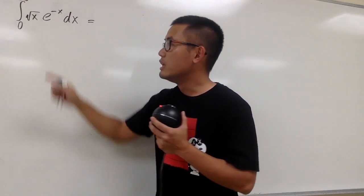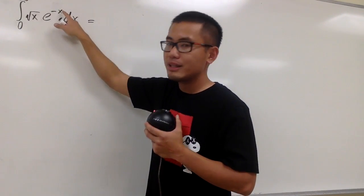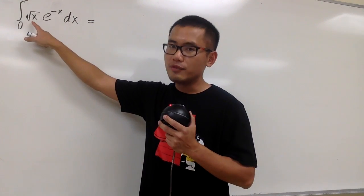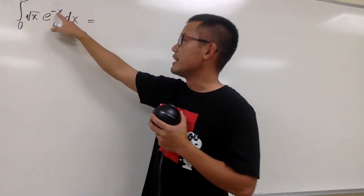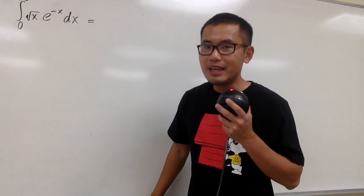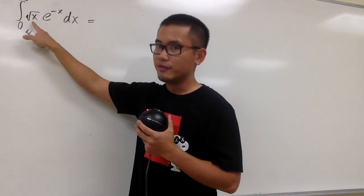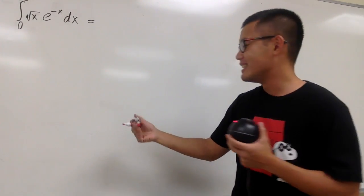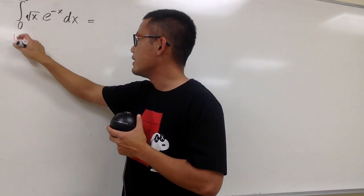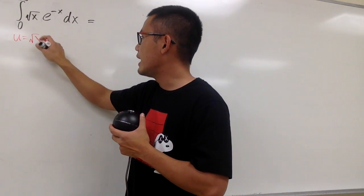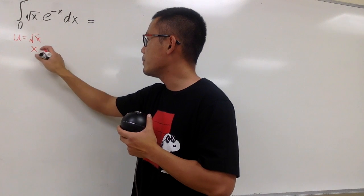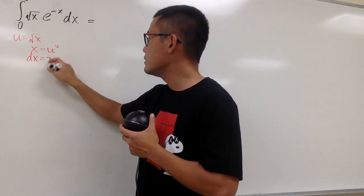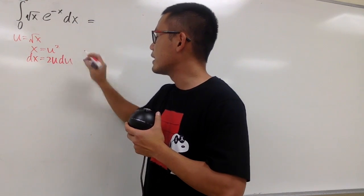The usual approach of letting u equal the exponent part is not going to work here, since square root of x is more complicated than negative x. So let's let u equal square root of x, square both sides to get x equals u squared, then differentiate both sides to get dx equals 2u du.